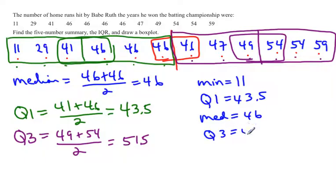Q3, which in this case is 51.5. And the max, which is equal to 59. Make sure you label them. Don't just assume everybody knows what these five numbers stand for, so make sure you label them as to what they stand for.